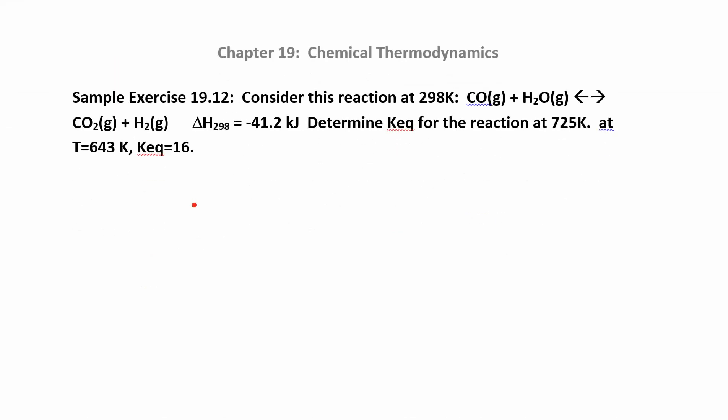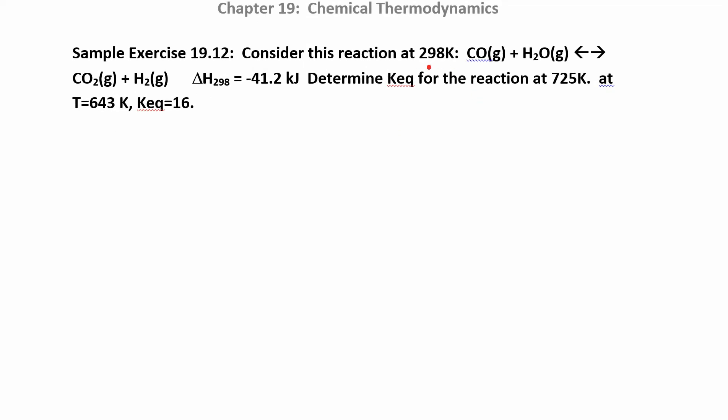Let's practice just using the van't Hoff equation in this problem here. They say consider this reaction at 298 Kelvin. They give you a delta H. And they say, find the equilibrium constant at a different temperature. If at 643, this is what the equilibrium constant is. So we have a lot of information here.